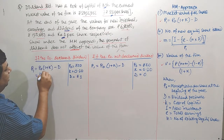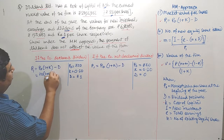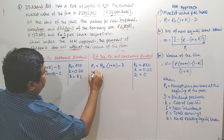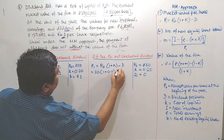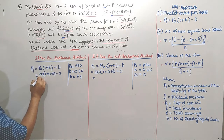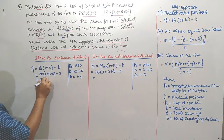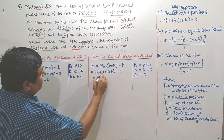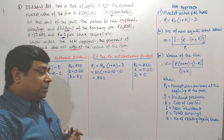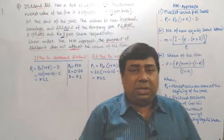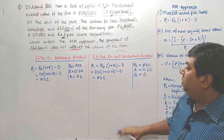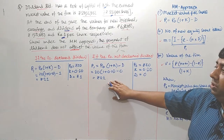For the first case: P1 = 20 × (1 + 0.10) − 1 = Rs. 21. For the second case: P1 = 20 × (1 + 0.10) − 0 = Rs. 22. So if the company declared dividend, P1 is Rs. 21; if the company did not declare dividend, P1 is Rs. 22.